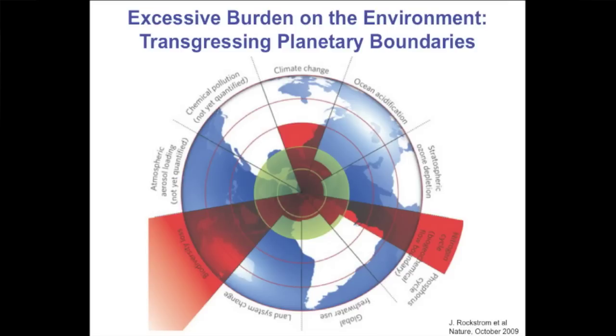Starting at the top, you can see climate change, ocean acidification, stratospheric ozone depletion, and so on. In the centre of this diagram you can see a green circle, which signifies the safe operating space on the planet that humans can occupy. If we can stay within that boundary, we'll be okay. But the scientists who developed this diagram have concluded that with respect to at least three of those issues — climate change, the sulphur cycle, and loss of biomass — we've already far exceeded the capacity of the planet to cope with these pressures, and we're pushing outward on some of the others.